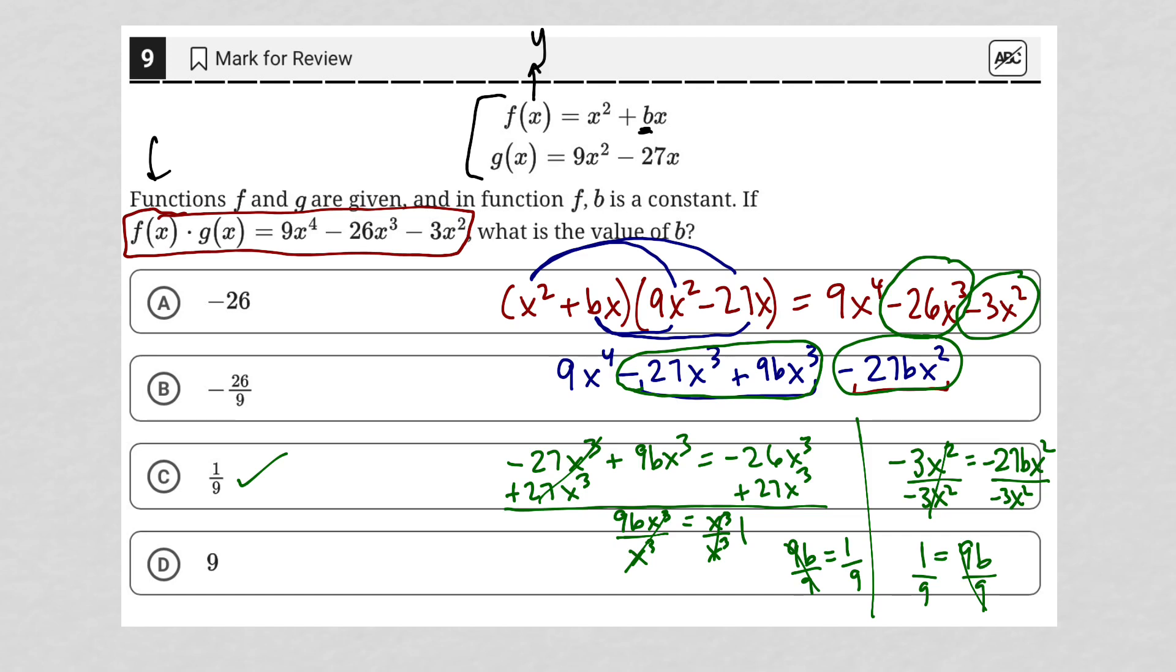So 1 ninth equals B. So there's our answer, choice C. At the end of the day, the question told us exactly what to do.